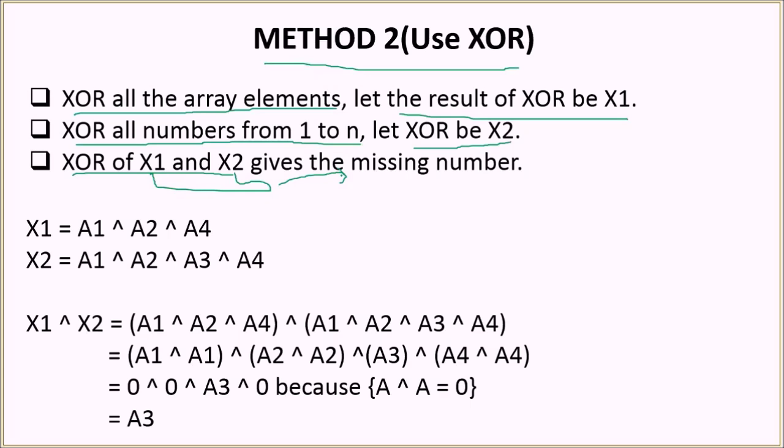Let's see how this works. Suppose we have an array which has elements A1, A2 and A4. We don't have A3 in the array. The X1 will become A1 XOR A2 XOR A4. That is what we do in the first step. Then X2 will become the XOR from A1 to A4, so A1 XOR A2 XOR A3 XOR A4.